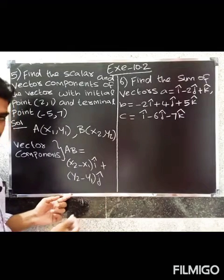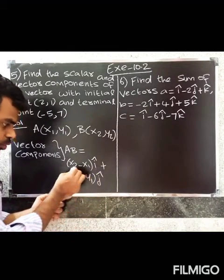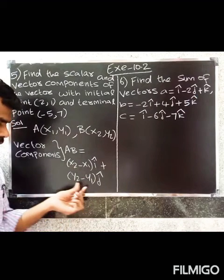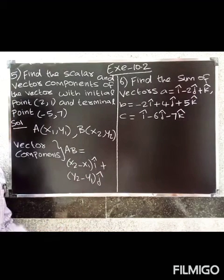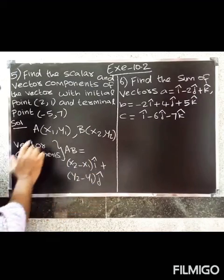AB equals (x2 minus x1) î-cap plus (y2 minus y1) ĵ-cap. This is the vector component formula. The scalar component is the coefficient of î-cap and the coefficient of ĵ-cap.